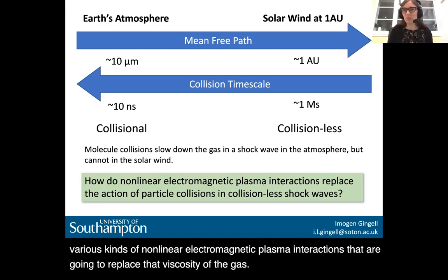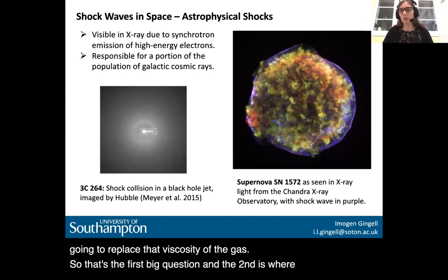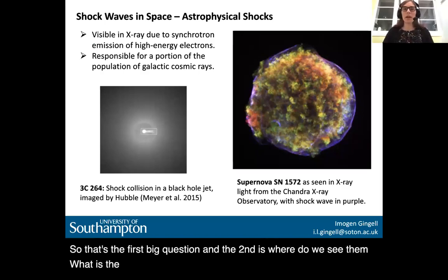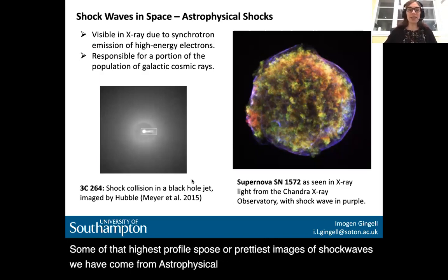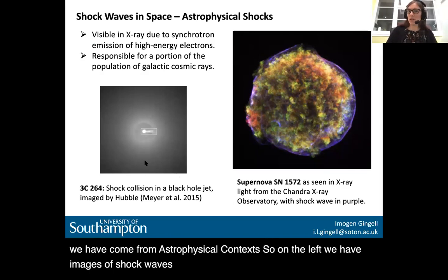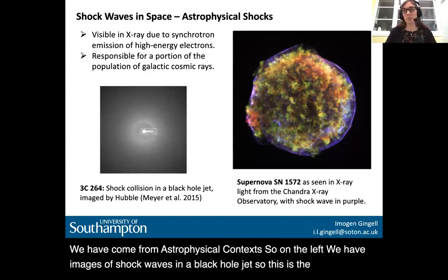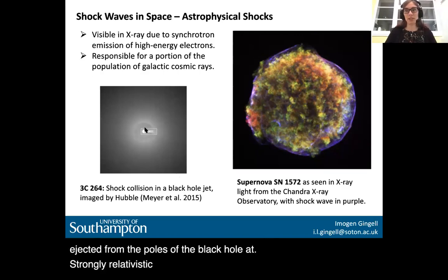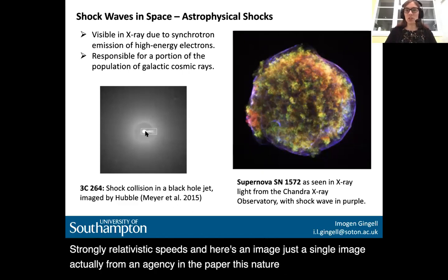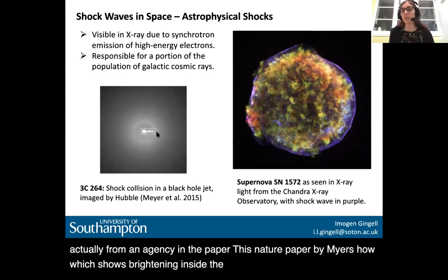The first big question is how collisionless shocks work. The second is: where do we see them? Some of the highest-profile or prettiest images of shockwaves come from astrophysical contexts. On the left, we have images of shockwaves in a black hole jet — plasma being ejected from the poles at strongly relativistic speeds. This is from a nature paper by Meyer et al., showing brightness inside the jet consistent with shockwaves moving and colliding through the jet.